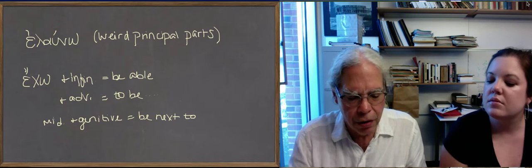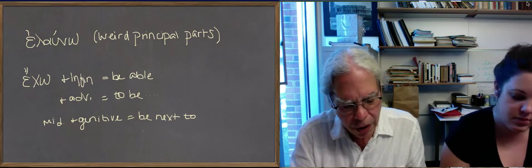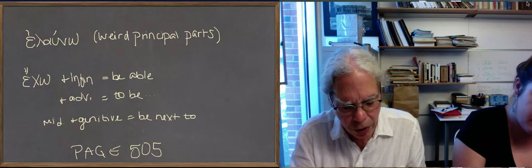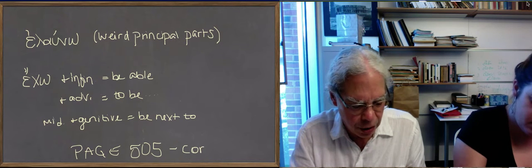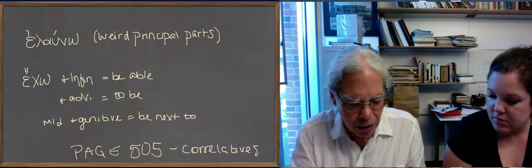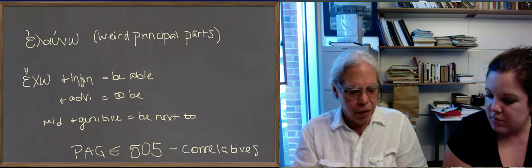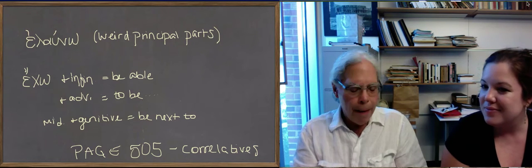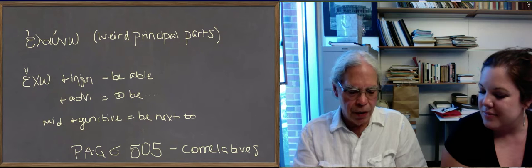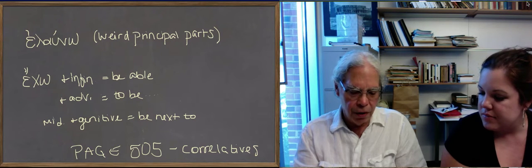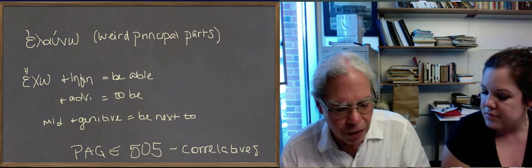There's a little chart on page 505 that lays out a couple of these words, along with one that you've already had. So we've had poias, poia, poion, and we're now having possos, passe, posson. Poia is about quality, possos is about quantity. In fact, the word for quality in Greek is poiotes, and the word for quantity is posotes. And so you get the demonstrative that goes with it, toyutas with poias, and the relative hoias, and then poias, possos, we get tasutas the demonstrative, and hassas the relative. So that's a nice little chart.